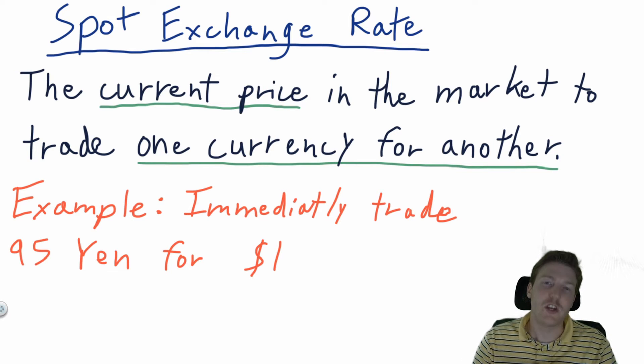In order to understand foreign exchange rates, we need to first understand spot exchange rates. So let's define that. A spot exchange rate is the current price in the market to trade one currency for another. An example of this would be if I wanted to immediately trade 95 yen for $1 in USD. So we're just going out in the market, trading one currency for another as fast as we possibly can. That is the spot exchange rate.